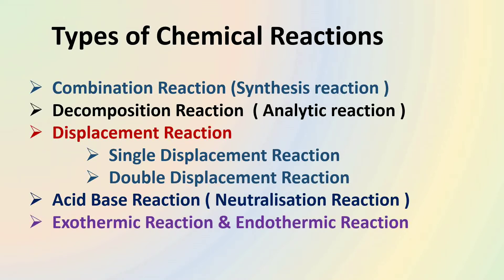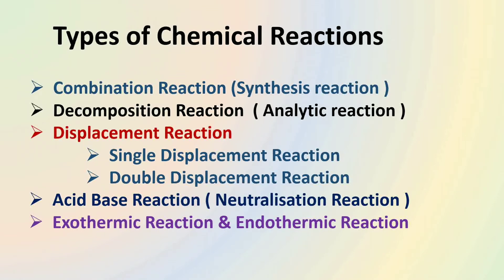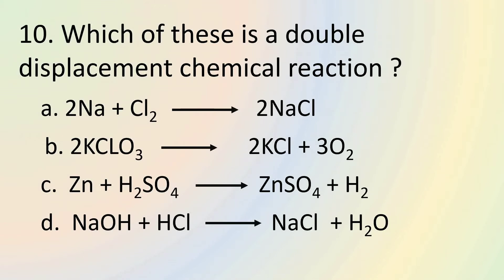And acid-base reaction is also called as neutralization reaction where a base reacts with acid to give salt and water. Similarly, on the basis of whether heat is absorbed or released, reactions may be endothermic or exothermic. In option A, sodium reacts with chlorine to give sodium chloride. It is a combination reaction. In option B, potassium chlorate decomposes to give potassium chloride and oxygen. It is a decomposition reaction. In option C, zinc substitutes sulfate from sulfuric acid to give zinc sulfate and hydrogen. It is an example of single displacement reaction. Whereas in option D, sodium hydroxide reacts with hydrochloric acid to give sodium chloride and water. So it is double displacement reaction and acid-base reaction at the same time.